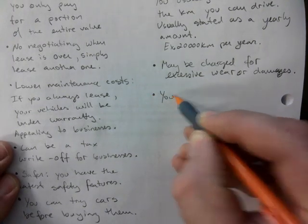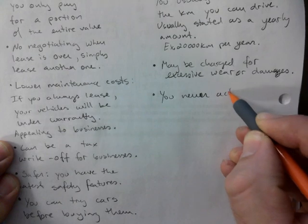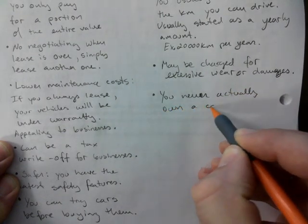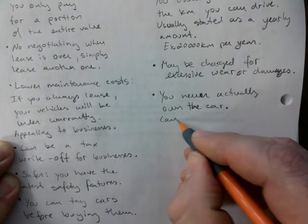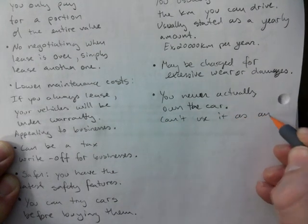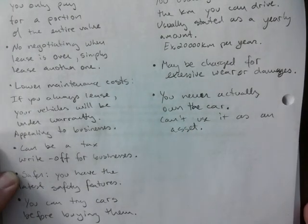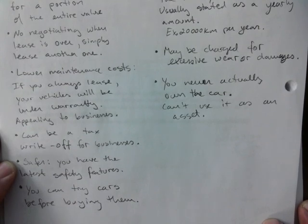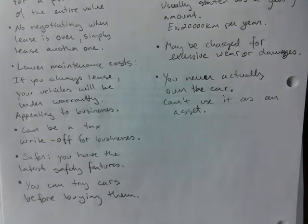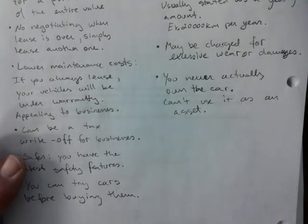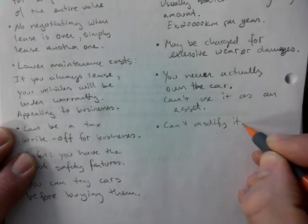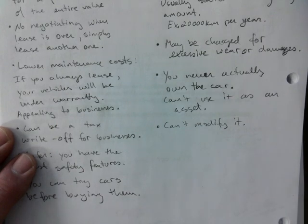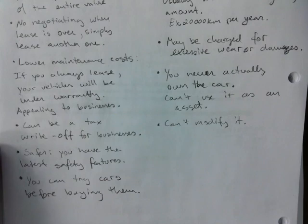You never actually own a car. You can't use it as an asset. The bank will often ask you, what do you own? We want to give you this loan, what do you own? How many cars do you own? You can't say that you own it, so you can't use it as collateral. Collateral is, like, they kind of have it in case you don't pay your loan. They can take your car. You can't modify it. This is big. You can't modify it at all. You can't put that resonator on your exhaust or a spoiler or anything like that.